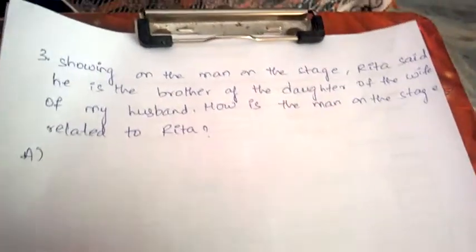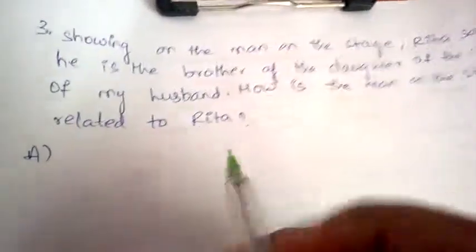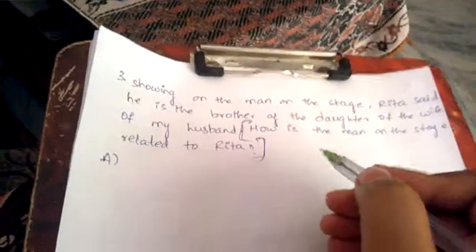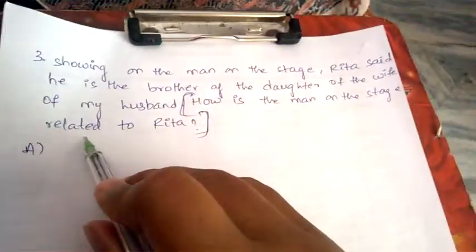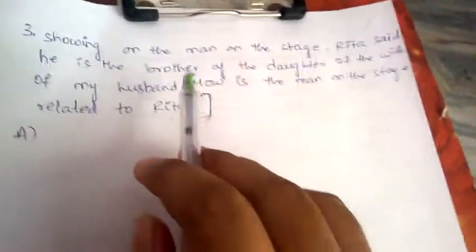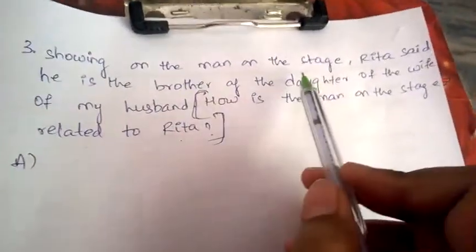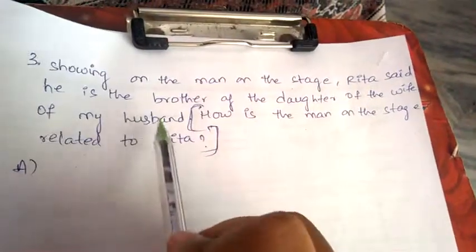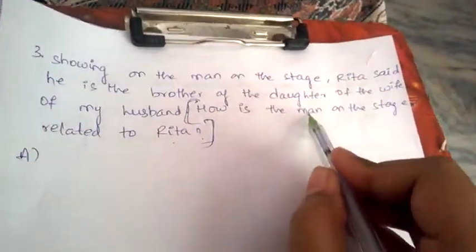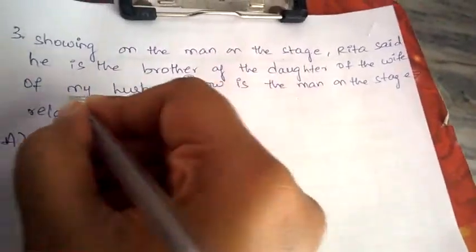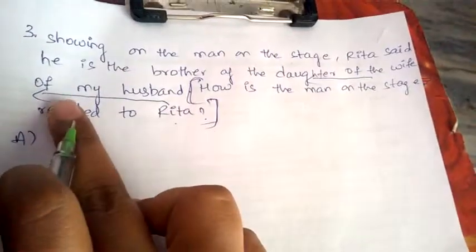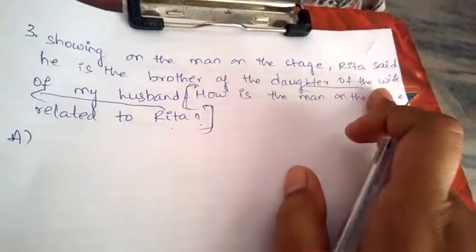Let's look at one more example. Showing a man on the stage, Rita said: 'He is the brother of the daughter of the wife of my husband.' How is the man on the stage related to Rita? This is the final question. As usual, let's start studying the question from the backward direction.